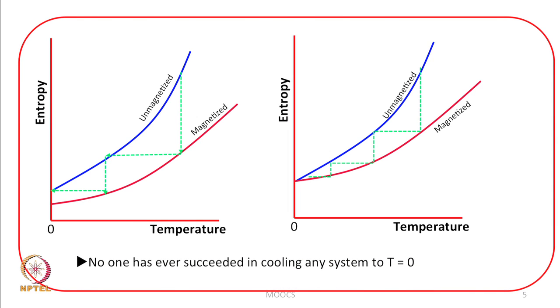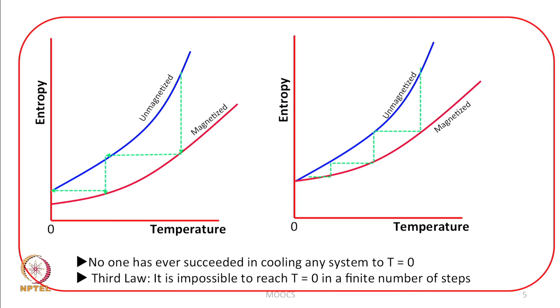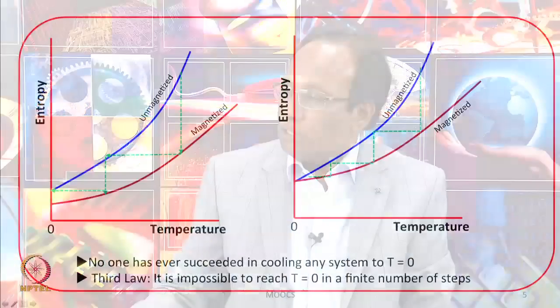This is formulated as an alternate form of the third law: it is impossible to reach absolute zero in a finite number of steps. In other words, no one has ever succeeded in cooling any system to absolute zero. The third law can be expressed in terms of entropies — entropy at absolute zero equals zero for perfectly crystalline substances — or in this alternate form: it is impossible to reach absolute zero in a finite number of steps.